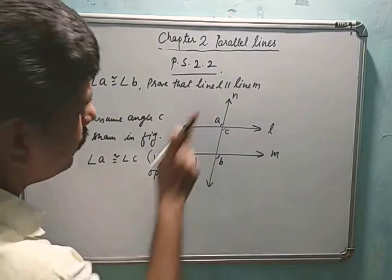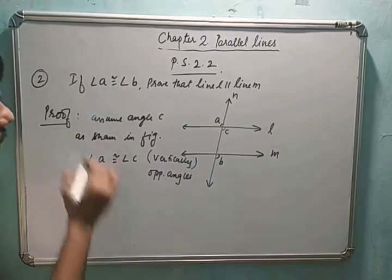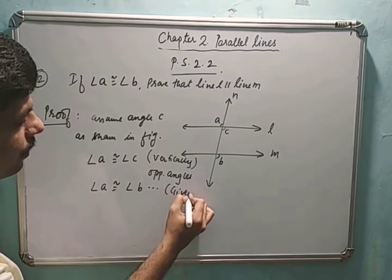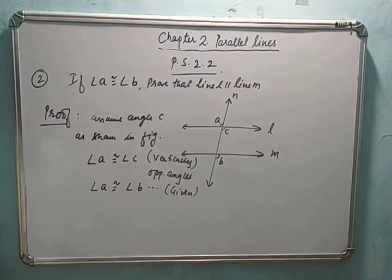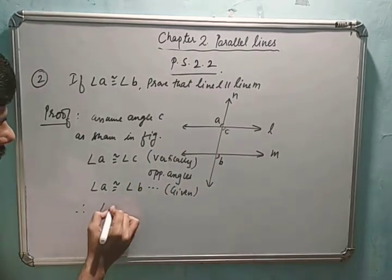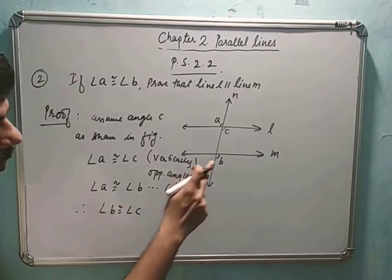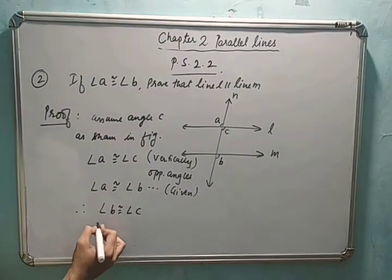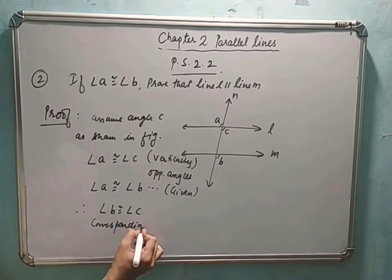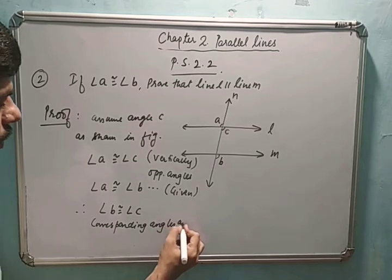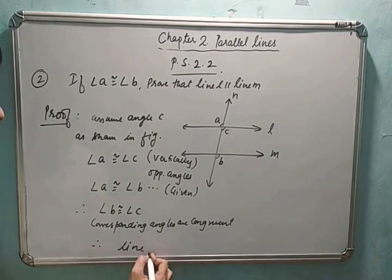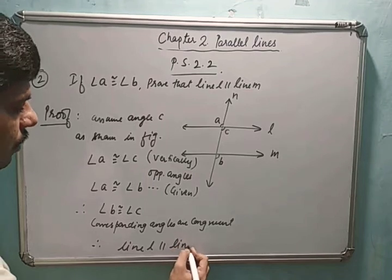So these two angles are congruent; the reason is vertically opposite angles. What is given: angle a is congruent to angle b. From these two statements, we can conclude: therefore angle b is congruent to angle c. Now if you see b and c, they are corresponding angles, so we can write: corresponding angles are congruent, therefore line l is parallel to line m.